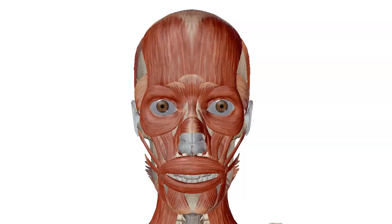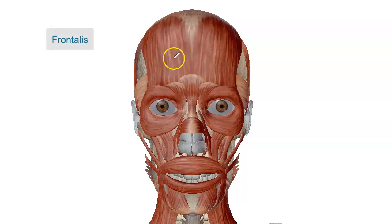Hi, my name is Dr. Noaz and today's lecture is going to cover the anatomy of the face muscles. We're going to jump right into it and our first muscle on the list is called the frontalis muscle, which is located right on the frontal bone.